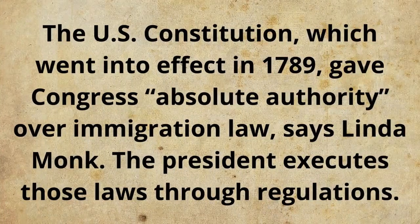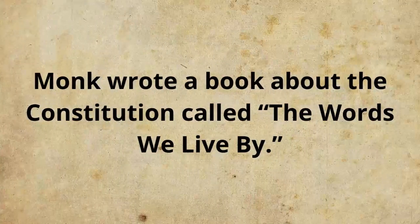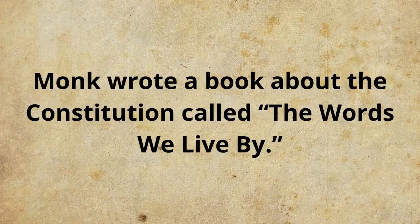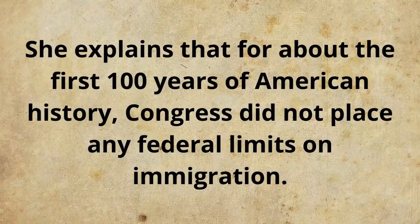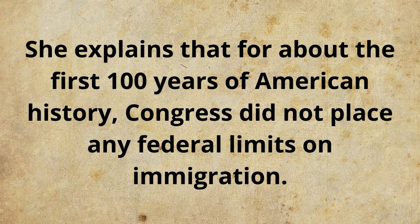The US Constitution, which went into effect in 1789, gave Congress absolute authority over immigration law, says Linda Monk. The president executes those laws through regulations. Monk wrote a book about the Constitution called The Words We Live By. She explains that for about the first 100 years of American history, Congress did not place any federal limits on immigration.